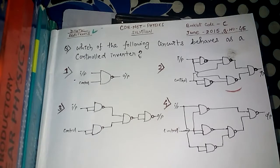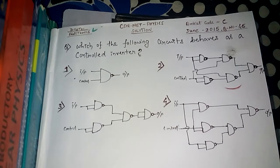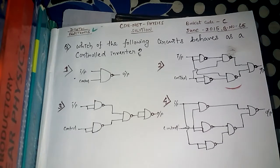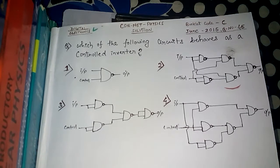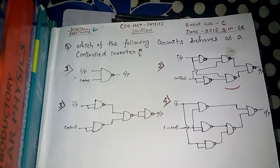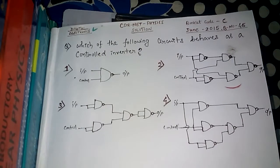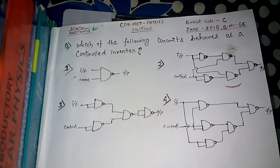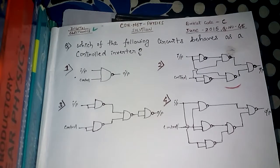To tackle this problem, we will first write down the boolean expression for the XOR gate, and then find the boolean expression of each option one by one. We will see which option's boolean expression matches with the XOR gate's boolean expression, and that will be the answer.